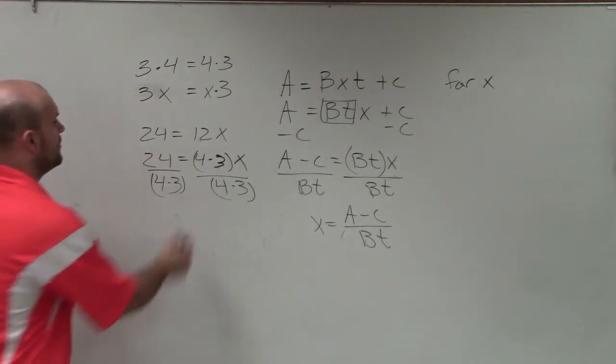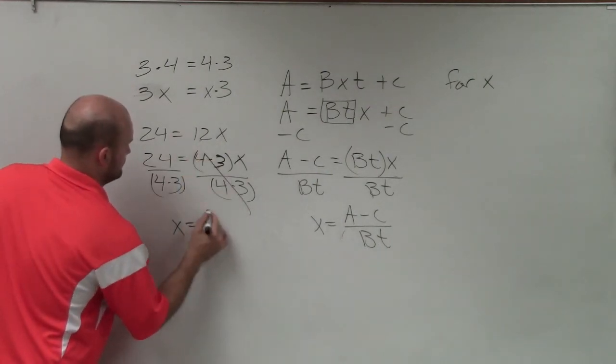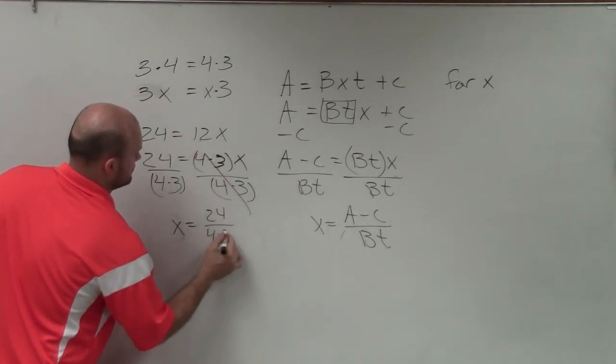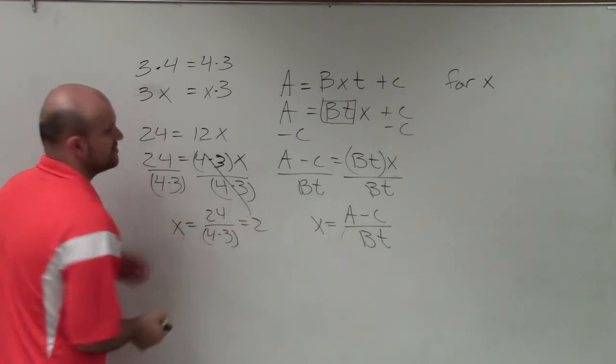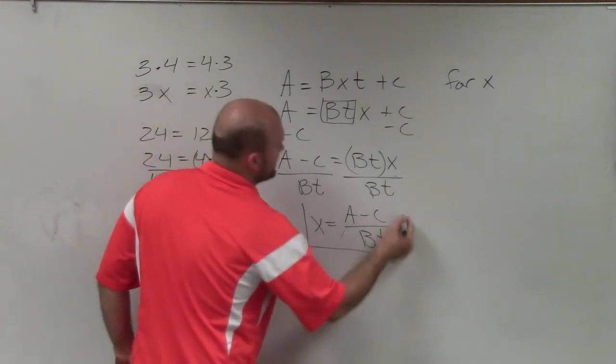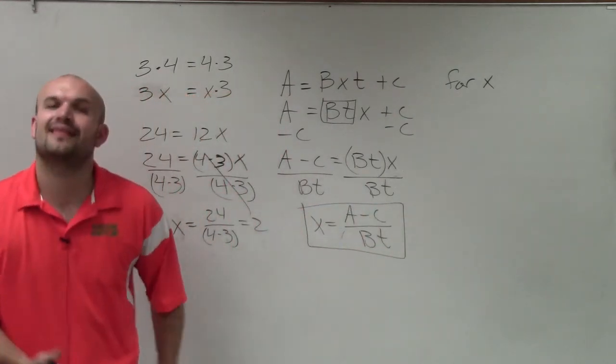All right? So, well, 4 times 3 is 12. 12 divided by 24 equals 2. So it's the exact same thing. And that is how we solve for x. Thanks.